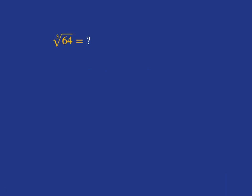Let's just remind ourselves of cube roots of plain old numbers. What's the cube root of 64? Well, if we're asking what's the cube root of 64, we're saying what times what times what gives you 64 — the same number multiplied by itself three times gives you 64.